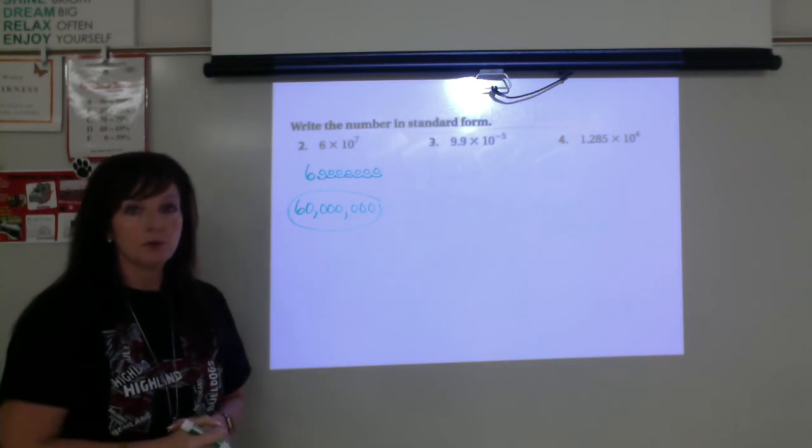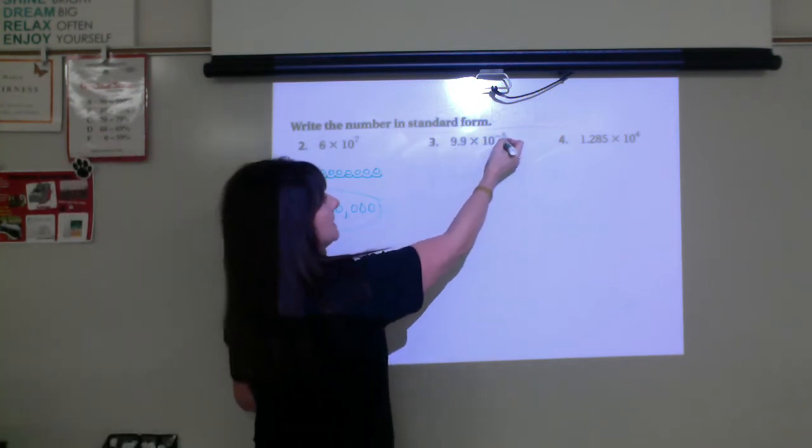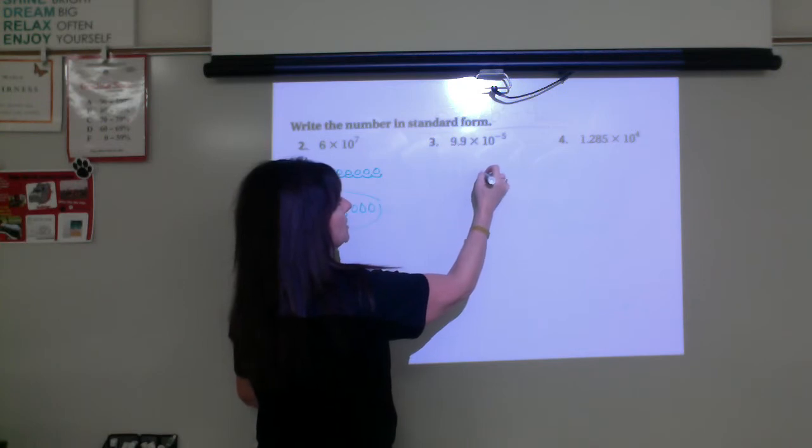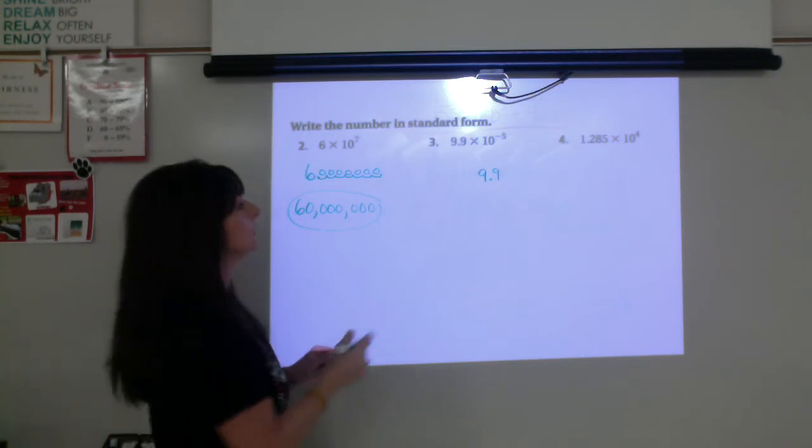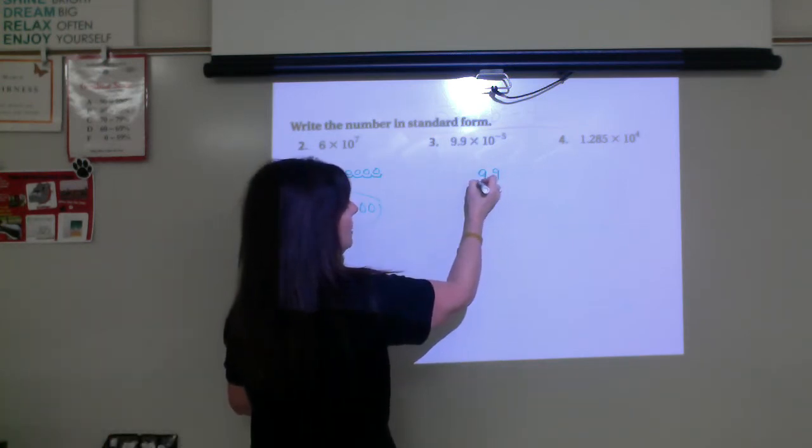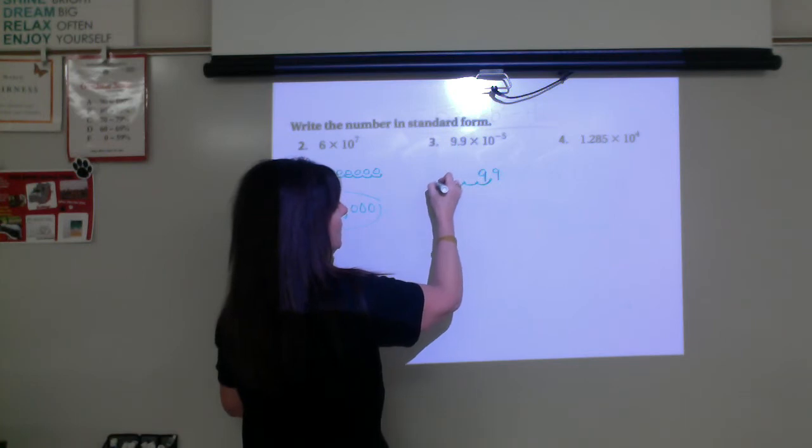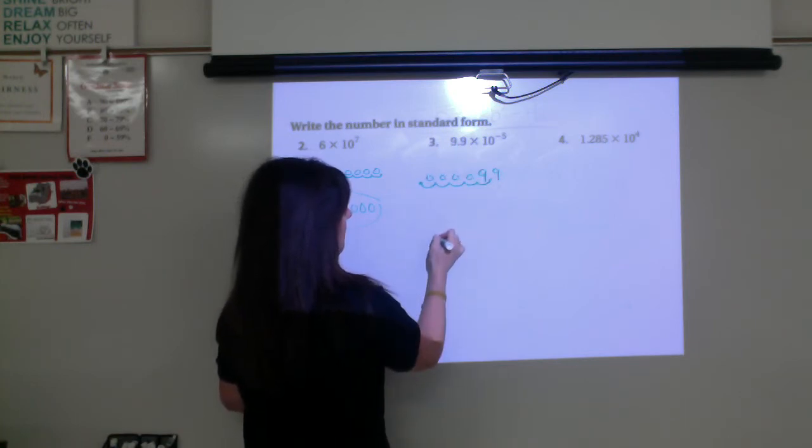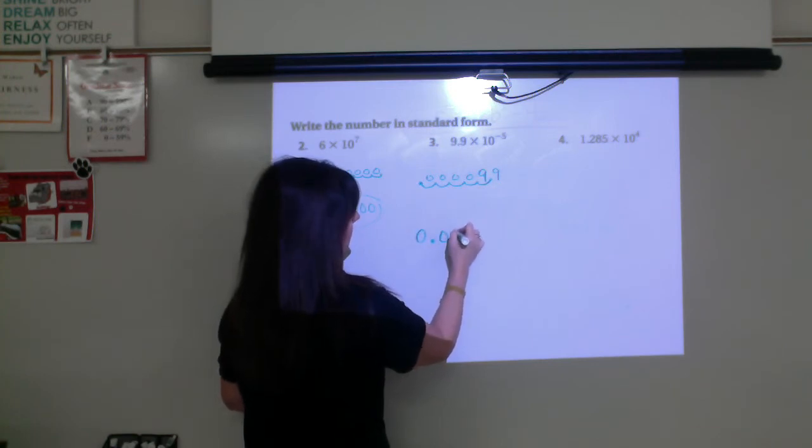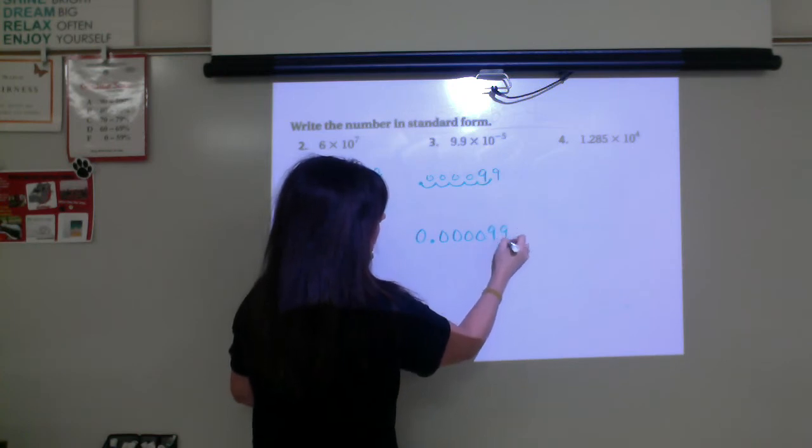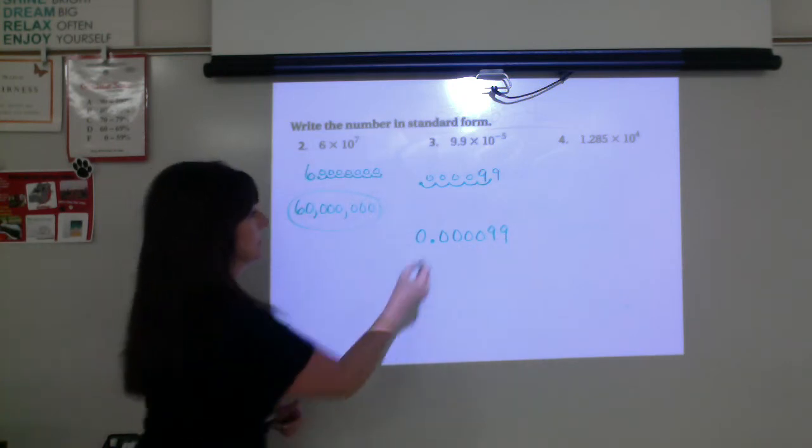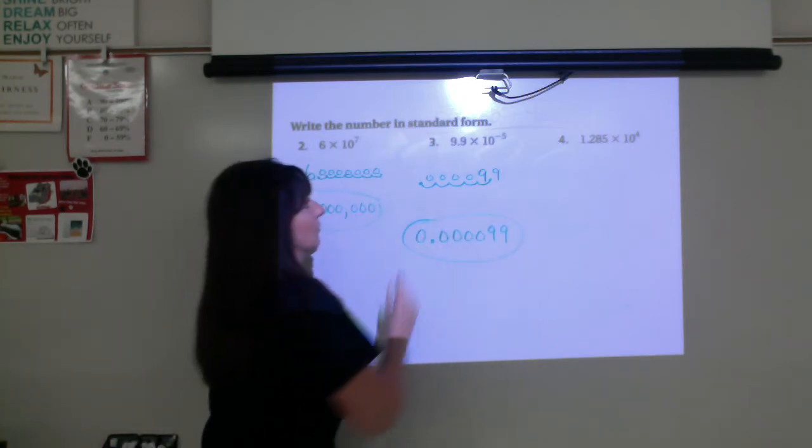In number 3, 9.9. This is a negative 5. So start with your 9.9. That's telling us it's a small number. And to write a small decimal number, we have to move it to the left. So we'll go 5 places. 1, 2, 3, 4, and 5. Fill in with zeros. If you want to add the zero in front of the decimal, that's okay. But there are only 4 zeros before the 99. So that would be our answer for number 3.